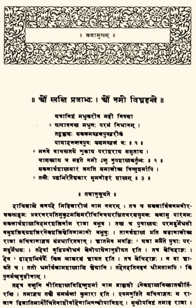The Panchatantra is a series of interwoven fables, many of which deploy metaphors of anthropomorphized animals with human virtues and vices. According to its own narrative, it illustrates, for the benefit of three ignorant princes, the central Hindu principles of Nidhi. While Nidhi is hard to translate, it roughly means prudent worldly conduct, or 'the wise conduct of life.' Apart from a short introduction, it consists of five parts. Each part contains a main story, called the frame story, which in turn contains several stories 'imboxed' in it, as one character narrates a story to another. Often these stories contain further imboxed stories. The stories thus operate like a succession of Russian dolls, one narrative opening within another, sometimes three or four deep. Besides the stories, the characters also quote various epigrammatic verses to make their point.